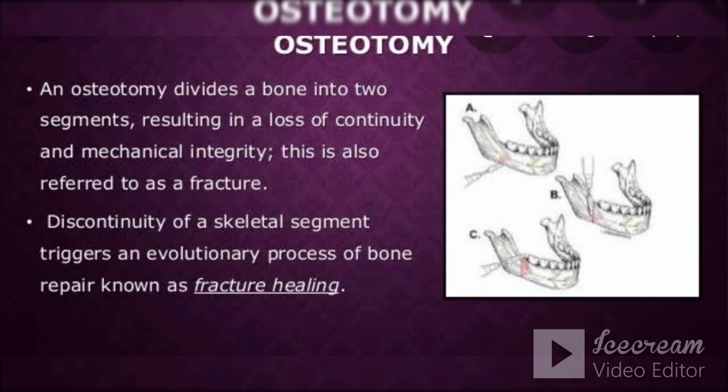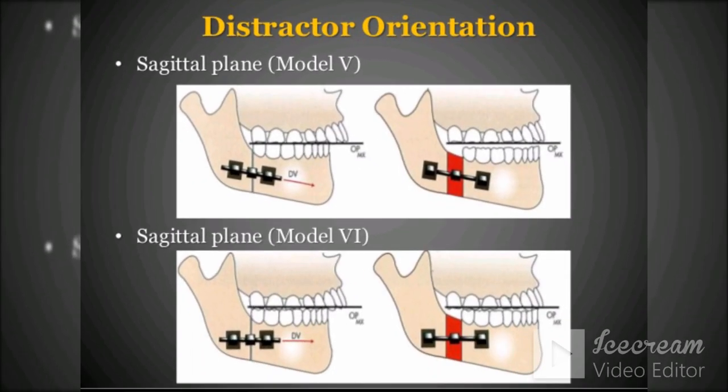A major advantage of distraction osteogenesis is that it provides a solution for the correction of severe and previously untreatable deficiencies of the craniofacial region. Distraction is advantageous because the surgeon can achieve large skeletal movements. In addition, distraction of soft tissues makes it an impressive and dynamic treatment modality that has become an essential part of the orthognathic surgeon's armamentarium. Several basic treatment principles for successful distraction of bone, as initially described by Ilizarov, include osteotomy of the bony cortex with minimal periosteal stripping. Depending on the surgical site, a latency period ranging from 3 to 7 days is necessary before activation of the distraction device.